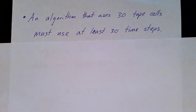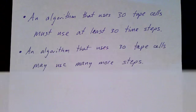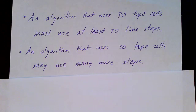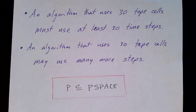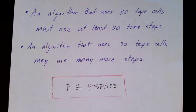To answer this question, notice that an algorithm that uses, for example, 30 tape cells has to use at least 30 time steps. It takes at least one step to visit each new cell, but an algorithm that uses 30 tape cells may use many more steps than that. So the relationship between these two classes is one of subset: P is a subset of P-SPACE.